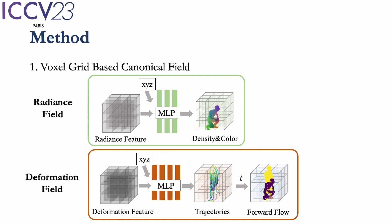The first is the voxel grid-based canonical field. It contains radiance field and deformation field. Radiance field estimates the density and color for each voxel at canonical time. Deformation field estimates the trajectory of each voxel, which could produce the forward flow from canonical time to the given time t.